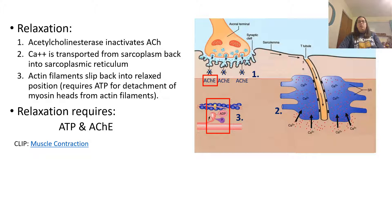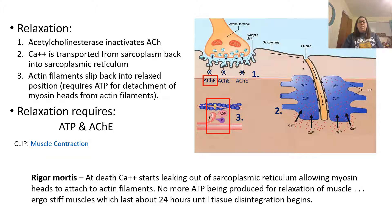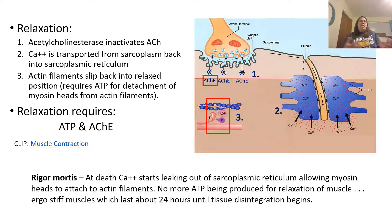Rigor mortis is what happens after death. At death, calcium starts to leak out of the sarcoplasmic reticulum, allowing the myosin heads to attach to the actin filaments as long as ATP is present. When no more ATP is being produced, the muscle cannot relax — because remember, ATP is required both to contract and to relax the muscle. This is why muscles go stiff, and it lasts about 24 hours until the actual muscle tissue starts to break down. If an individual is in rigor, we know they have been dead less than 24 hours.